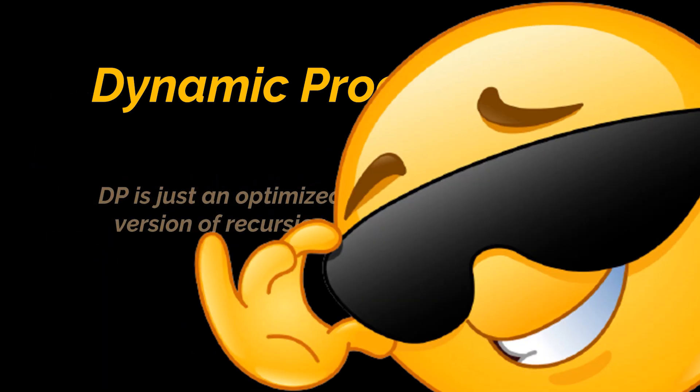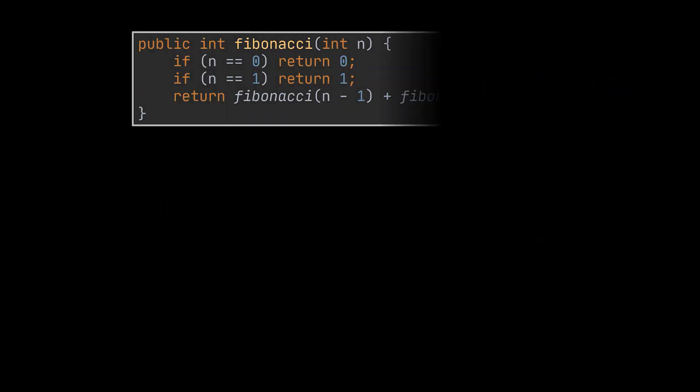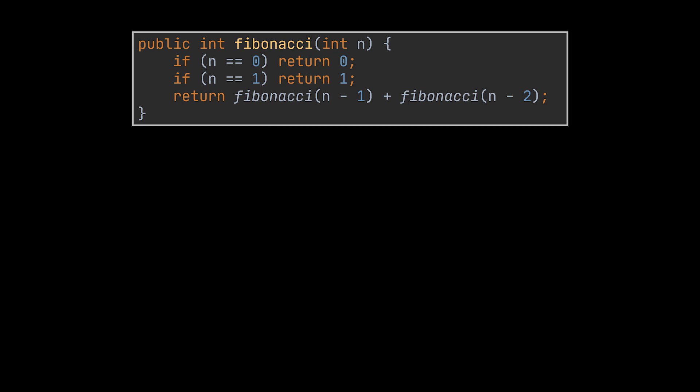Yeah, and that's because DP is just an optimized version of recursion. Now before we delve into dynamic programming, let's bring back one of the examples we gave in our recursion video. The code you see is the recursive implementation of the Fibonacci numbers we previously covered.